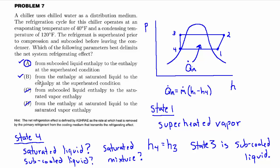It's very tempting here to pick B from the enthalpy at the saturated liquid, which would be state 4, to the enthalpy at the superheated condition, state 1. But it would be wrong in the sense that we don't know for a fact that state 4 is a saturated liquid. So that's why A is the better choice. See you in the next video.